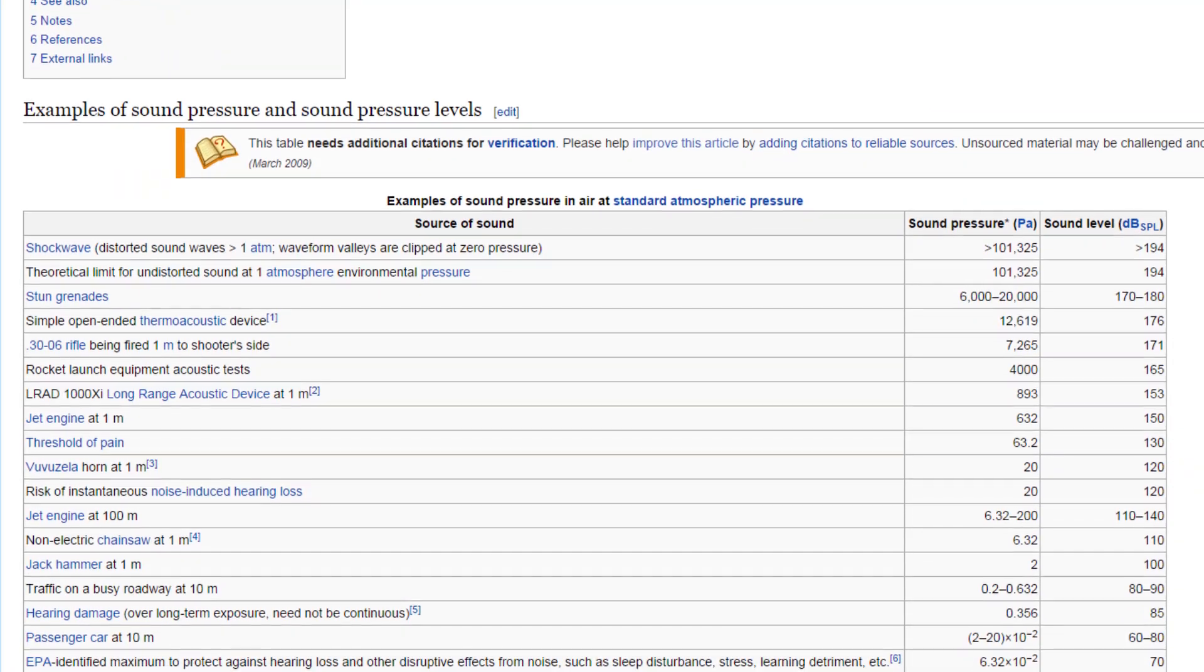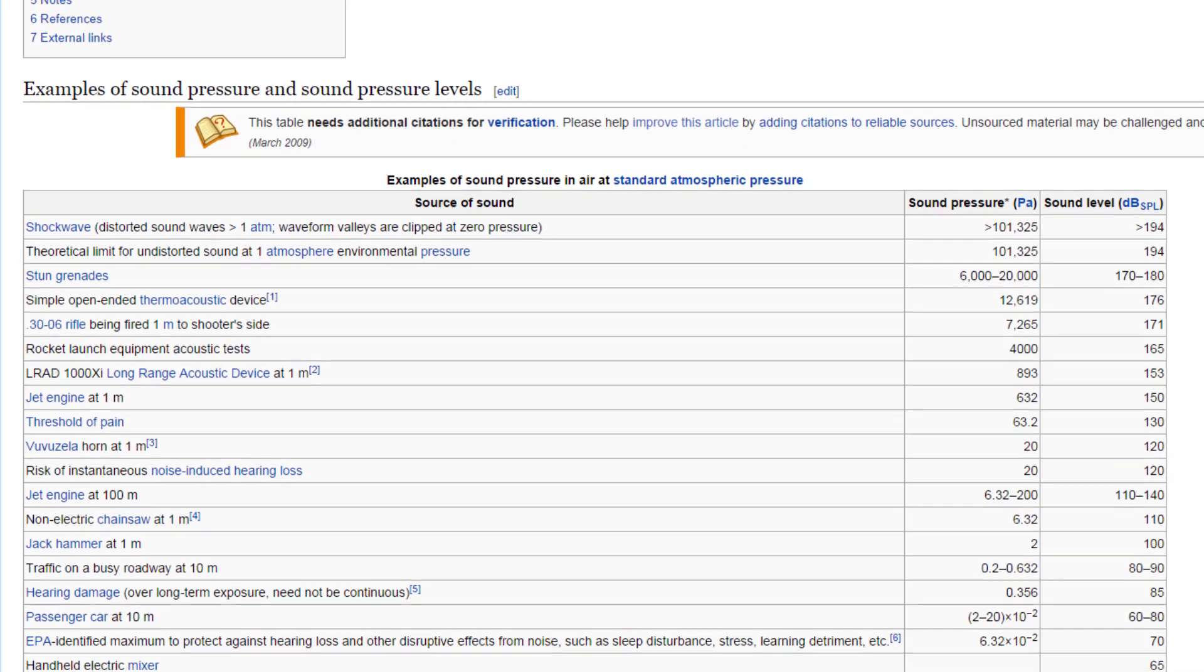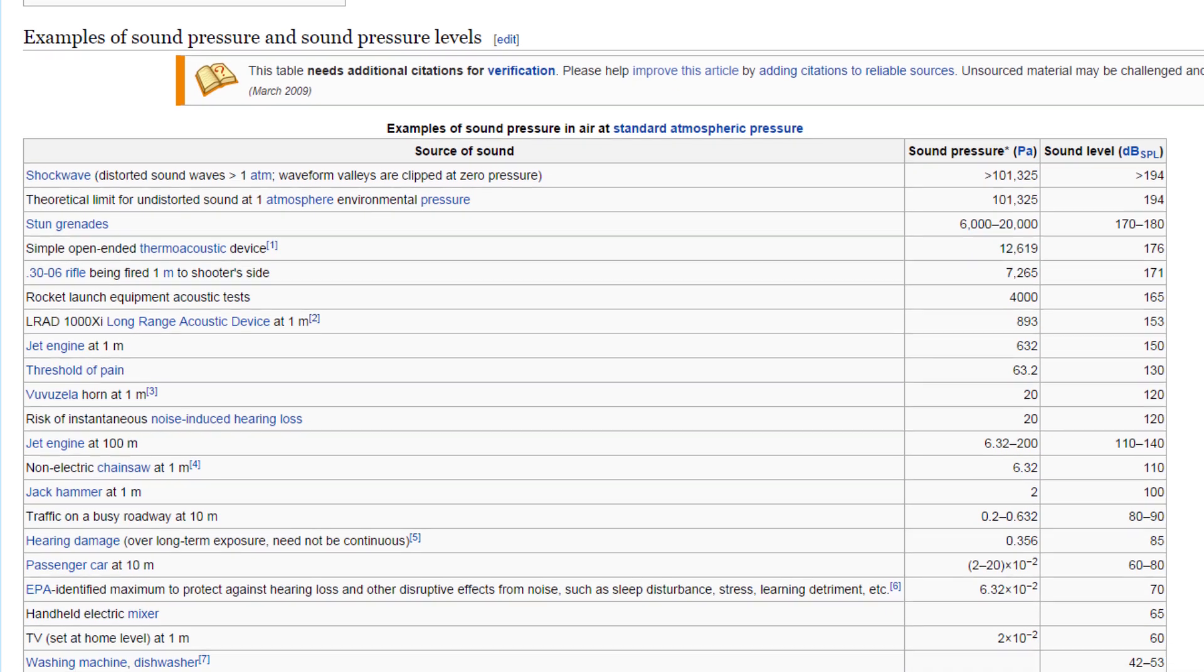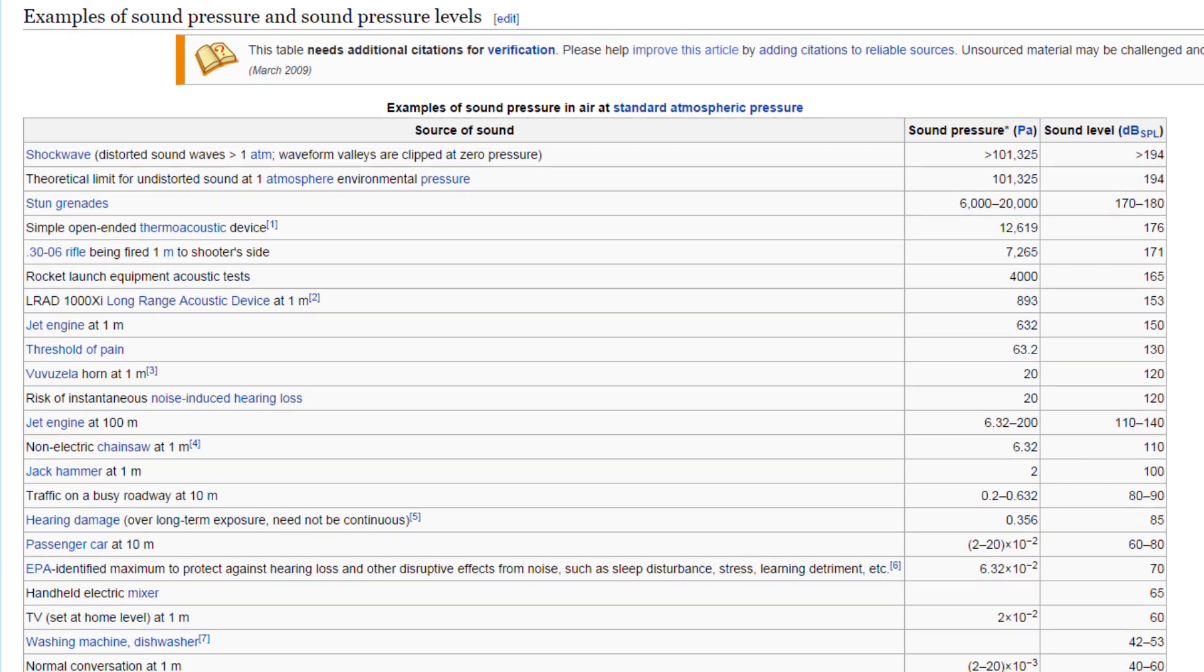Wikipedia has a handy-dandy chart that you can reference next time you see a loudness rating in decibels so that you have some context for interpreting the otherwise, truthfully, pretty confusing numbers.